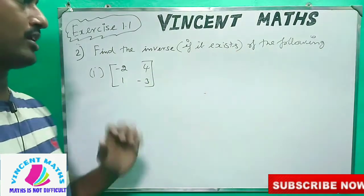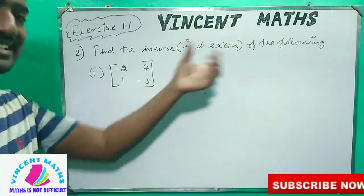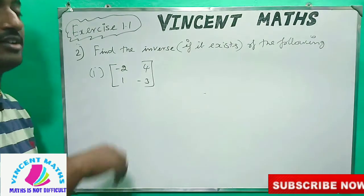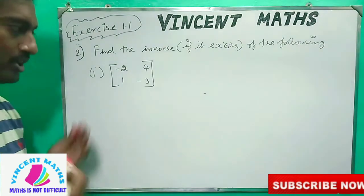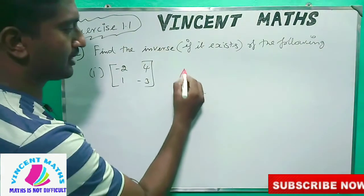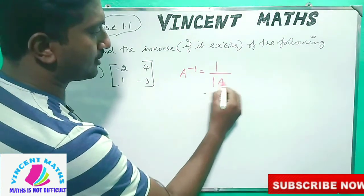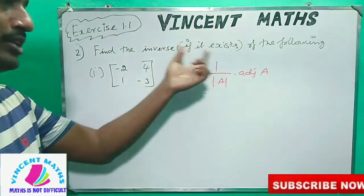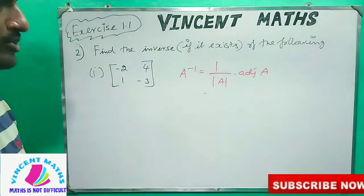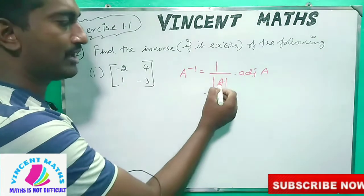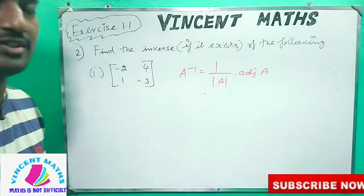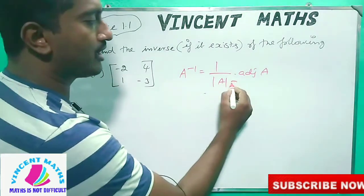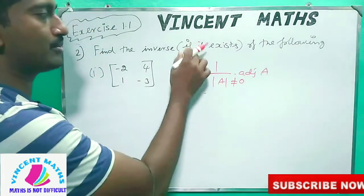Find the inverse of the following, if it exists. To make the inverse, we use the inverse form: A inverse equals 1 over the determinant of A, into the adjoint of A. If the determinant of A is 0, then it is 1 by 0 — so if the determinant is not equal to 0, we can find the inverse.